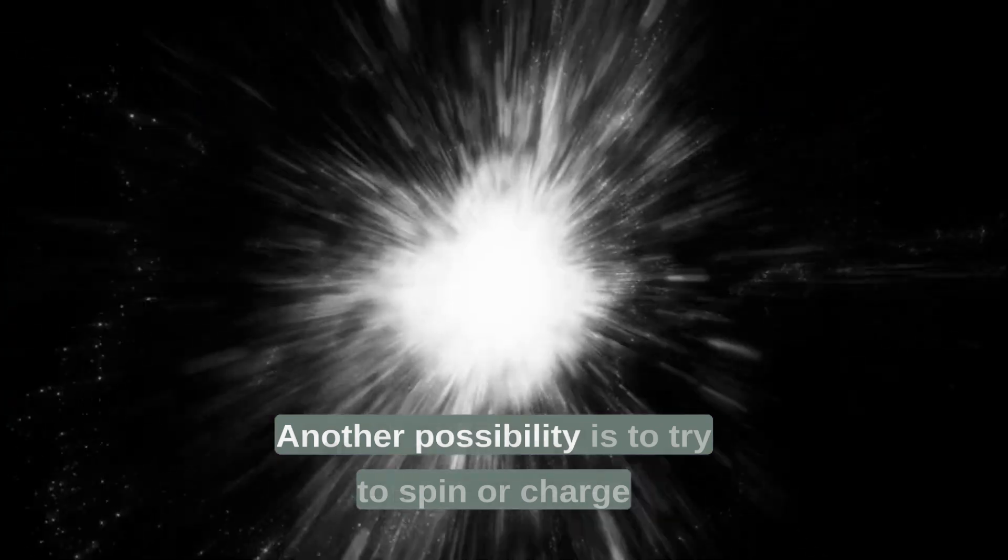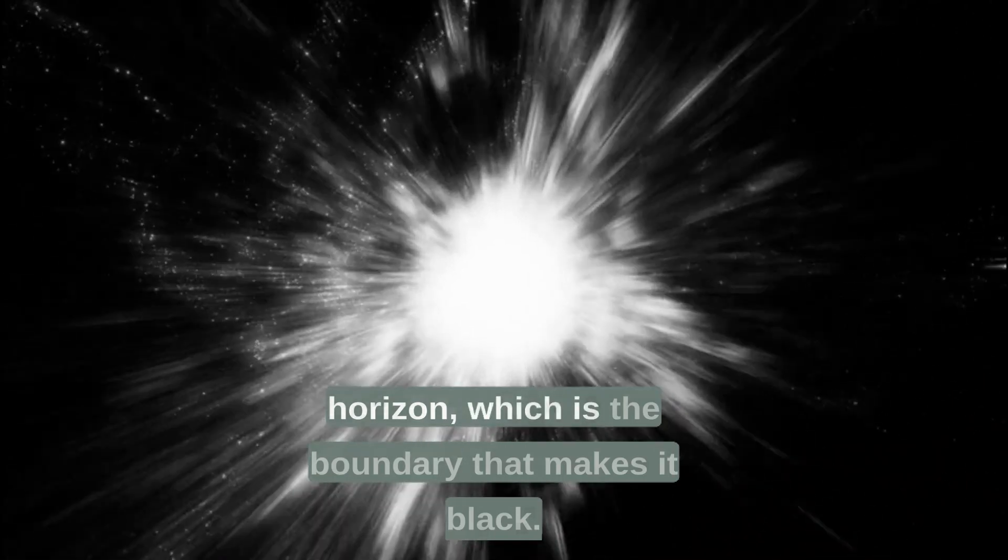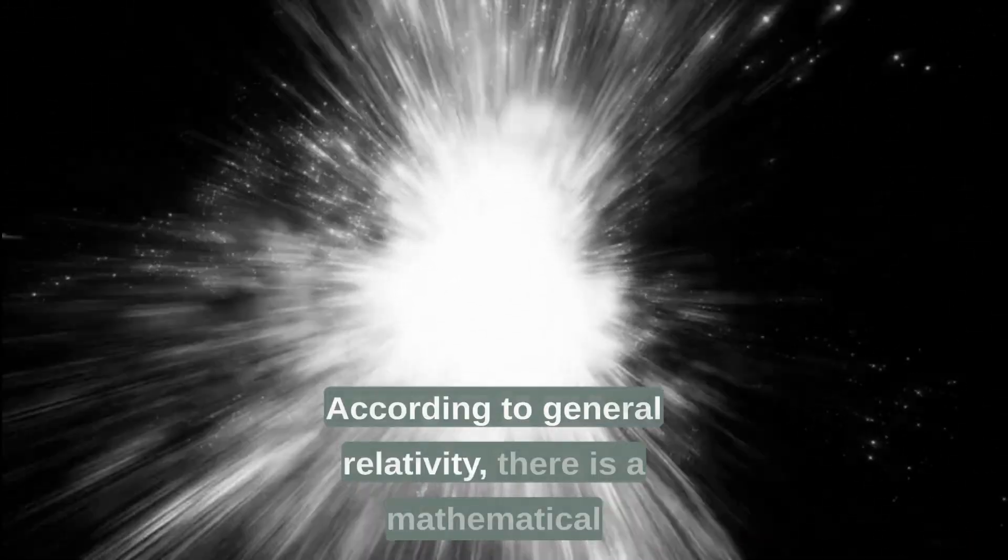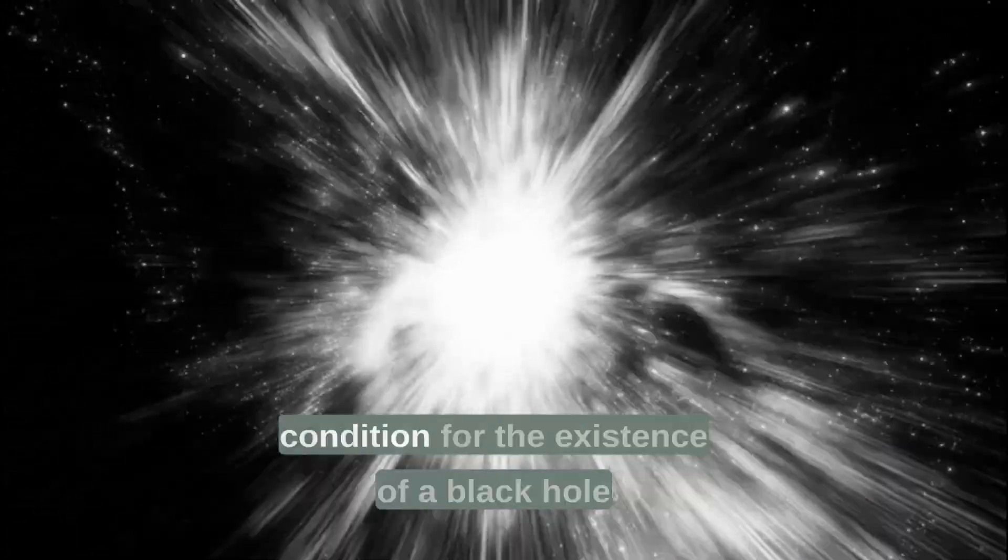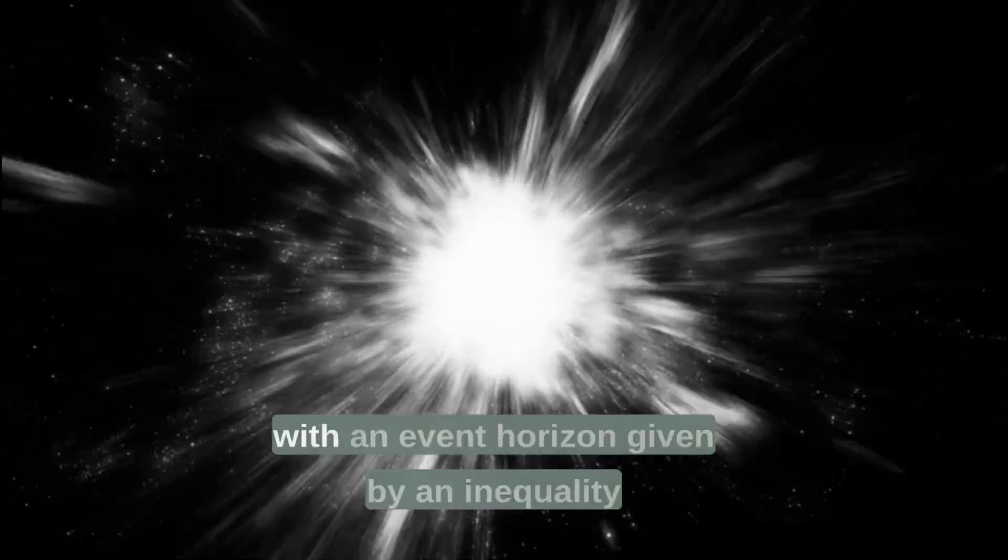Another possibility is to try to spin or charge up a black hole until it loses its event horizon, which is the boundary that makes it black. According to general relativity, there is a mathematical condition for the existence of a black hole with an event horizon.